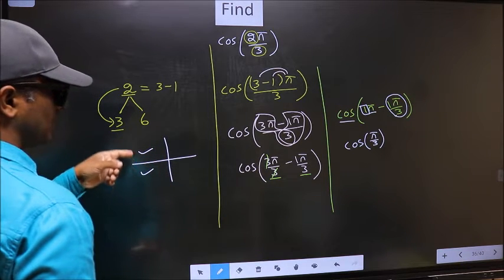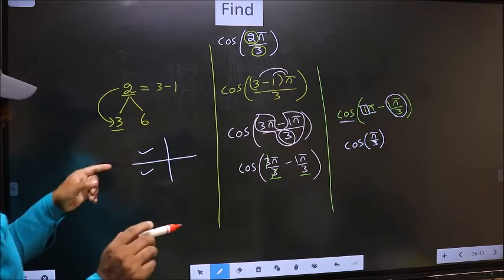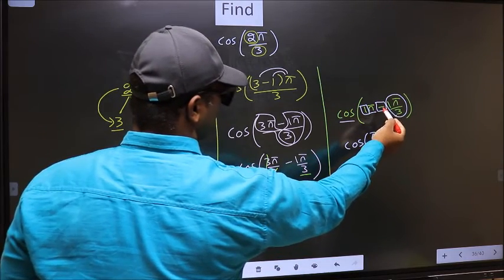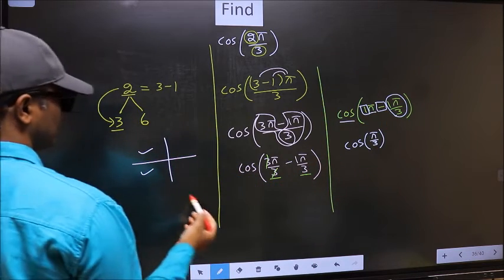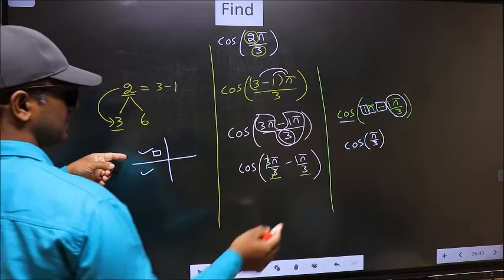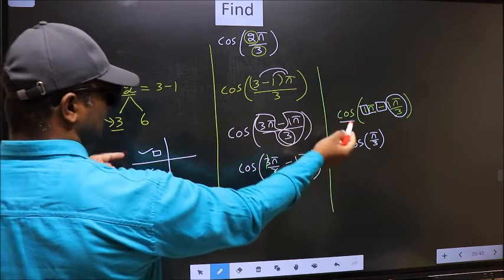So now to check in which quadrant does it lie, we should look at this symbol. Here we have negative. That means angle lies in the second quadrant. And in the second quadrant, cos is negative. So put negative.